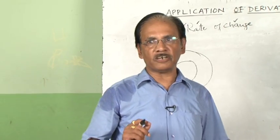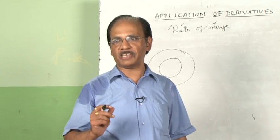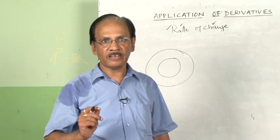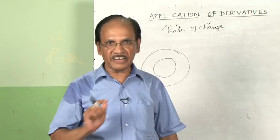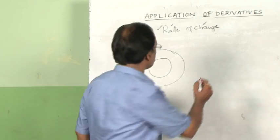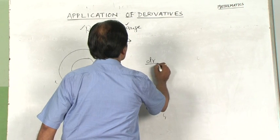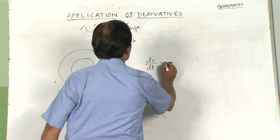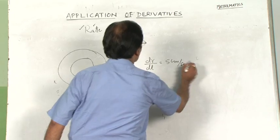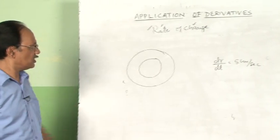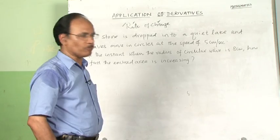You are asked what is the rate of increase of the area when the distance is 8 centimeters. Here, you are given dr/dt, that is equal to 5 centimeters per second. This is the speed with which the ripples are emanating.